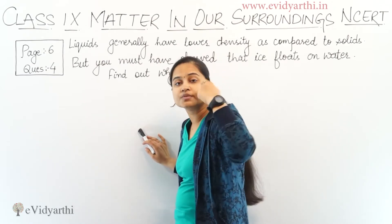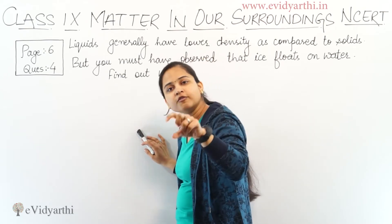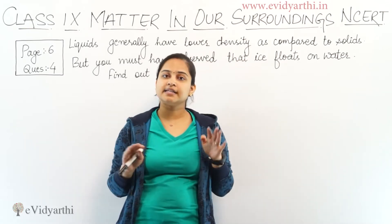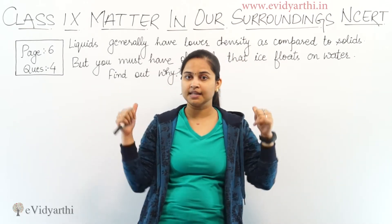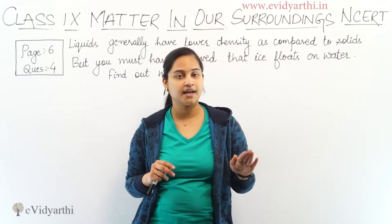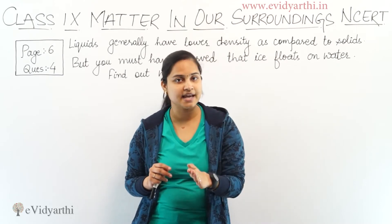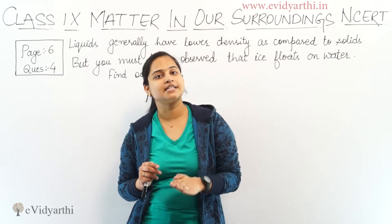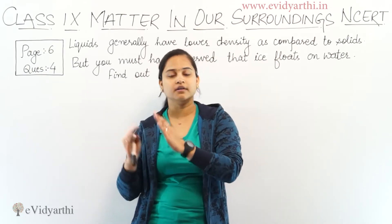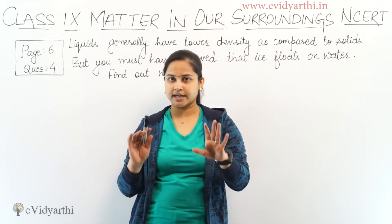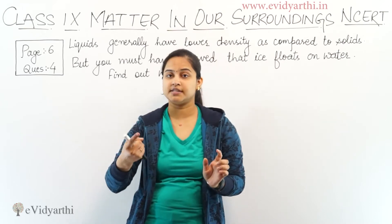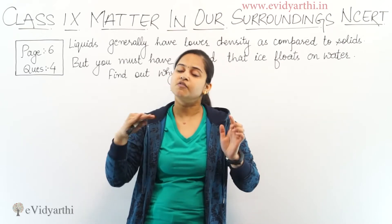Because we have observed that ice is floating on water, let's look at this: if any type of thing is floating on water — in this case ice is floating on water — the ice is in a solid form and yet its density is less than water. This is why ice floats on water.